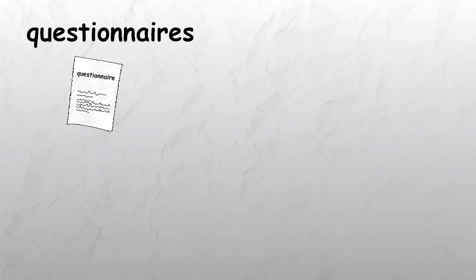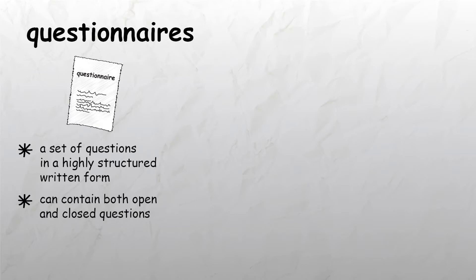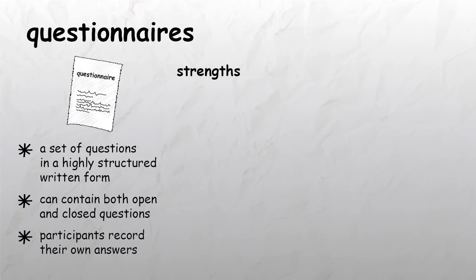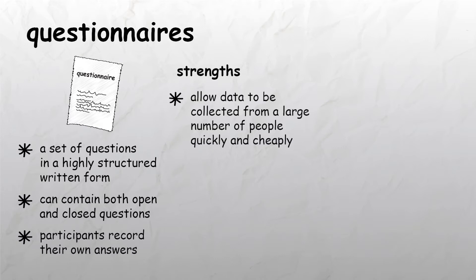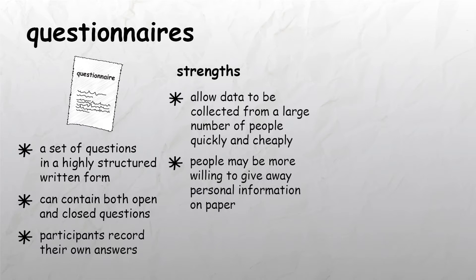One type of self-report is a questionnaire, which consists of a set of questions, usually in highly structured written form. Questionnaires can contain both open and closed questions and participants record their own answers. A strength of questionnaires is that they allow data to be collected from a large number of people quickly and cheaply. People may also be more willing to give away personal information on paper than they would face to face, especially if the questionnaire is anonymous.